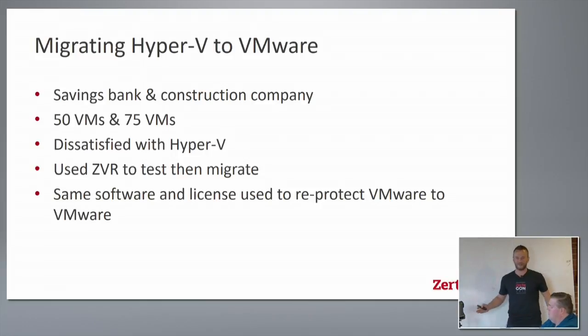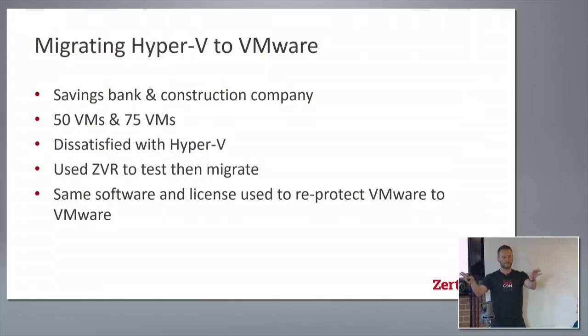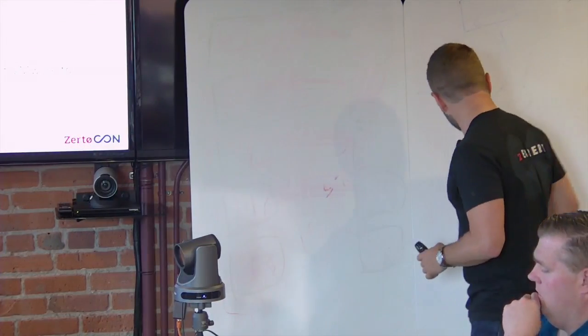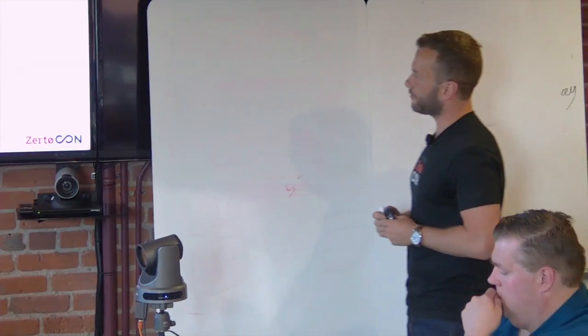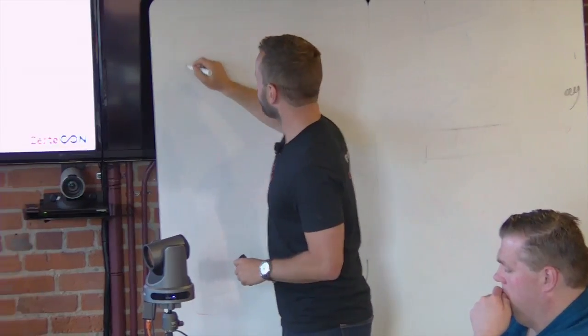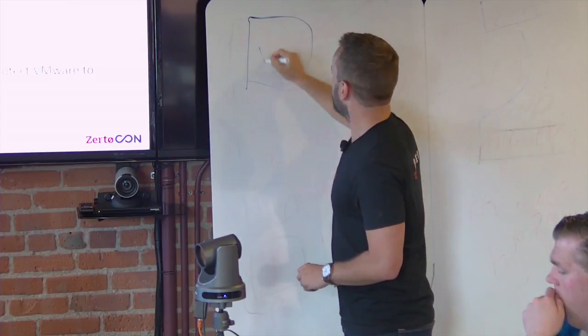They used Zerto to first test the migration, so they protected the VMs between the two infrastructures and then they used the same software to replicate and protect it thereafter.